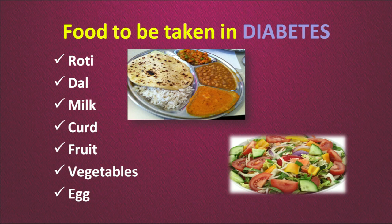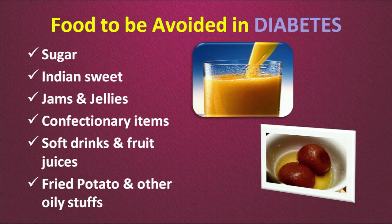What should you eat when suffering from diabetes? You do not have to change much except for a few things — regularly take the advisable diet, medication and exercise. You can have a simple balanced diet which includes roti, dal, milk, curd, fruits, vegetables, egg and even non-veg. What you cannot have is sugar, Indian sweets, jams and jellies, confectionery items, soft drinks, fruit juices, fried potato and other oily stuffs.